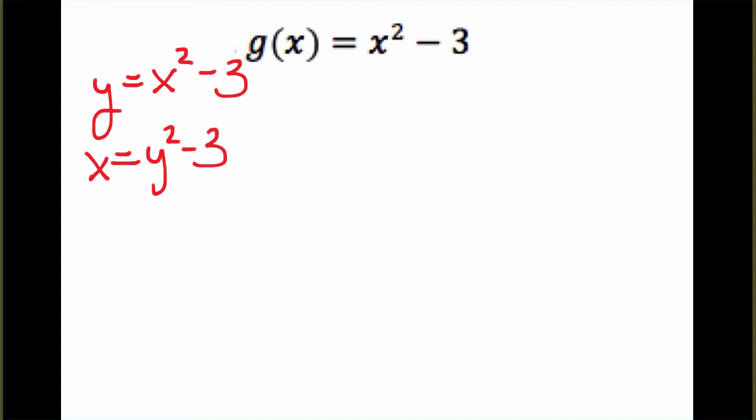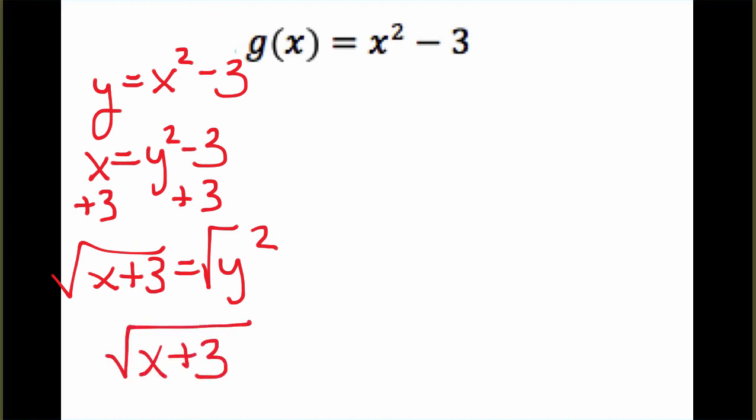We start by switching our x and our y. Next, we're going to solve for y. First, in this case, I would add three to each side of the equation. And then next, I'm going to take the square root of each side of the equation. What I end up with is the square root of x plus 3 equals y. Or in other words, g inverse equals the square root of x plus 3.